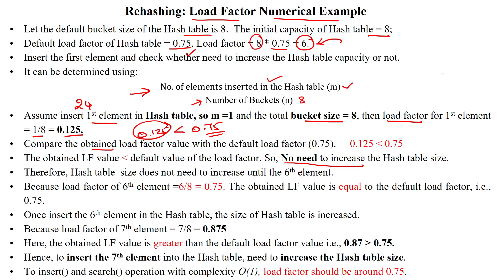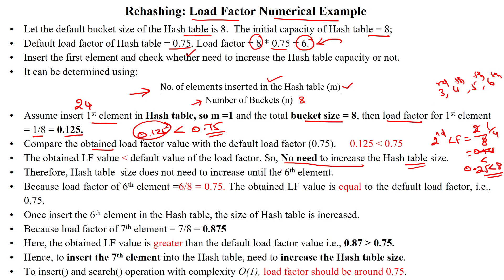Like that, you calculate the load factor for the third, fourth, fifth, and sixth elements. When you insert the sixth element, you get 6/8 = 0.75, which is equal to the default load factor of 0.75. Once the calculated load factor reaches the same value as the threshold, we have to increase the hash table size.